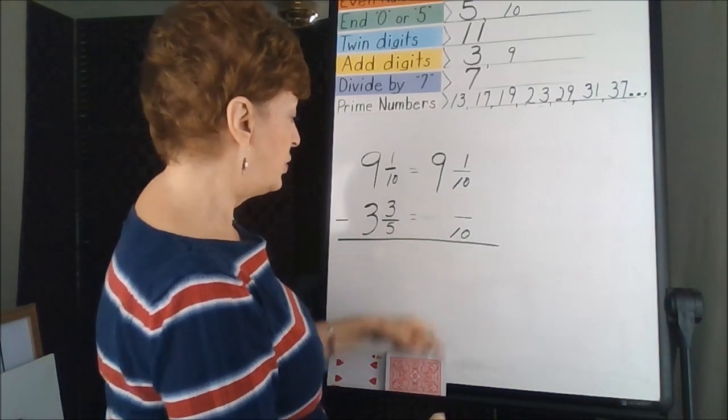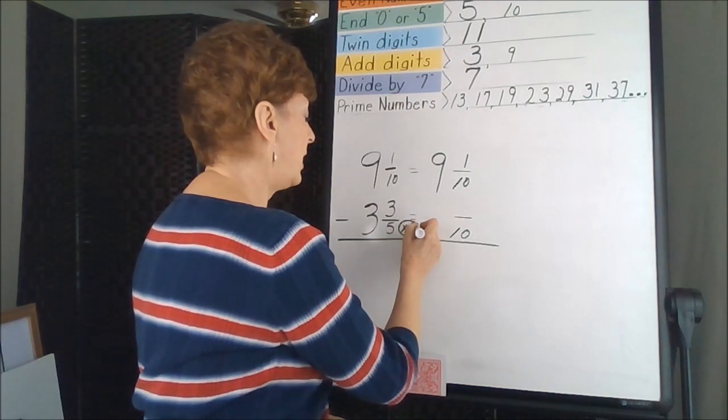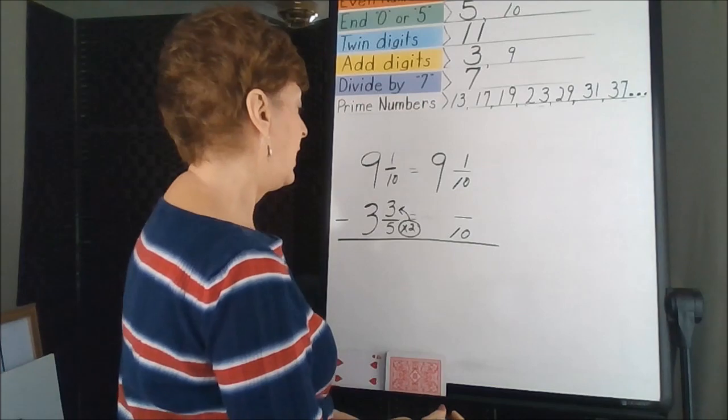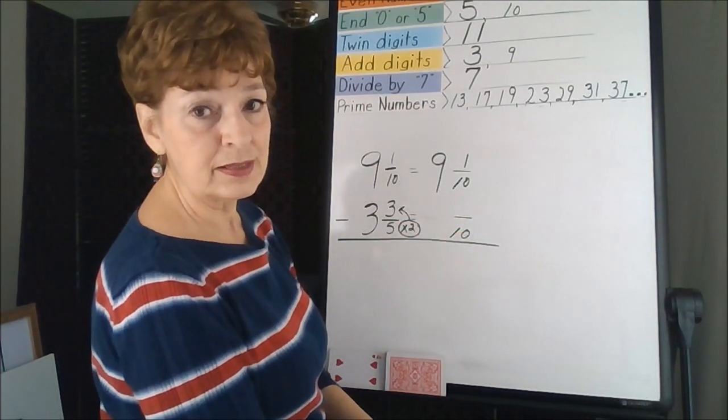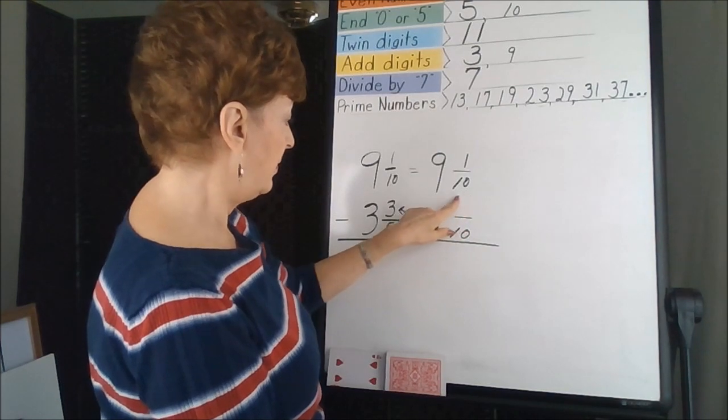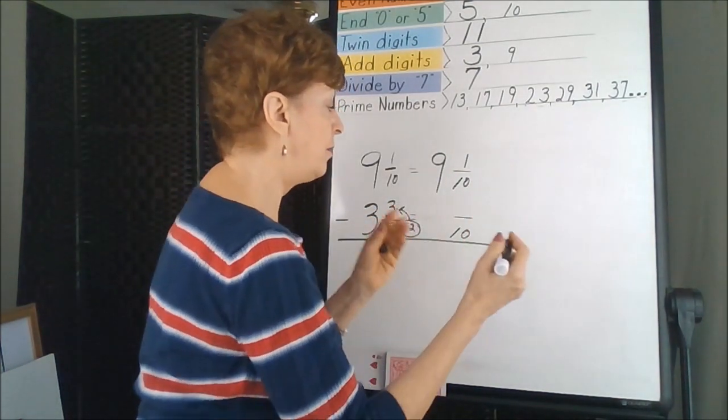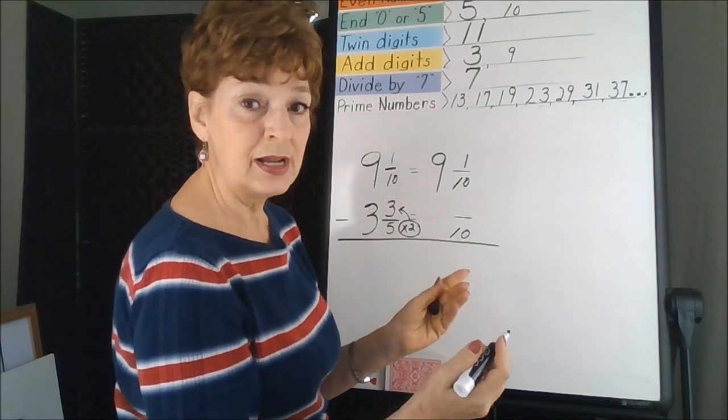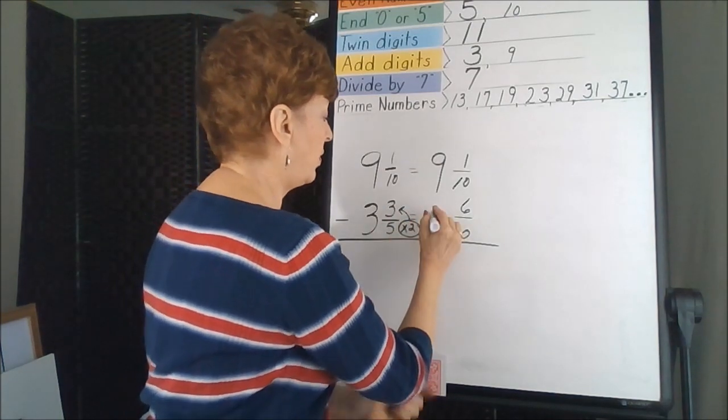5 times what gives you 10? 5 times 2. So you're going to use the times 2 for the numerator. And there's only one spot where that answer could go. It's a numerator, and this is open. So 2 times 3 is 6, and now that I've got the calculation, I can put it right where it belongs, and then move my whole number over.